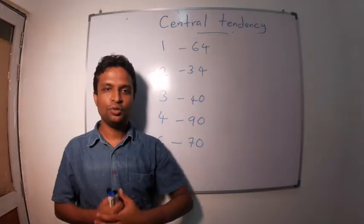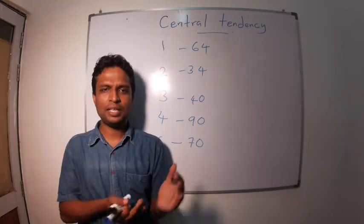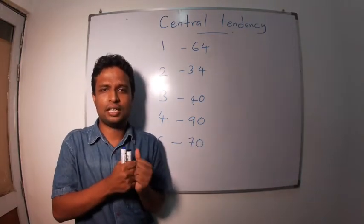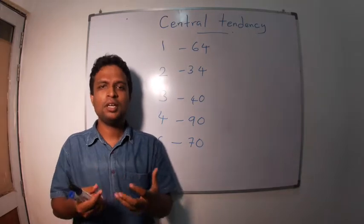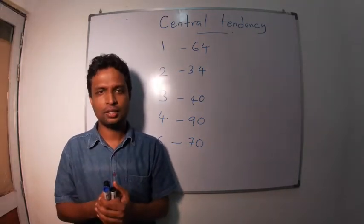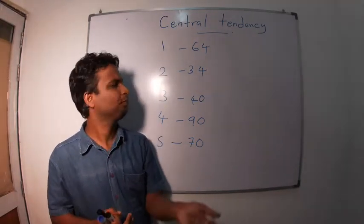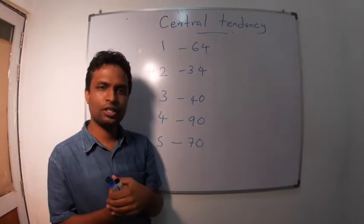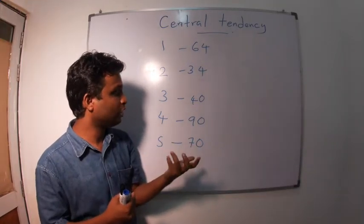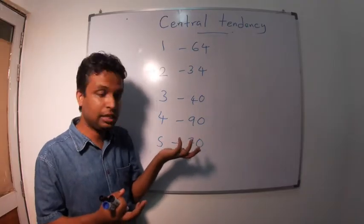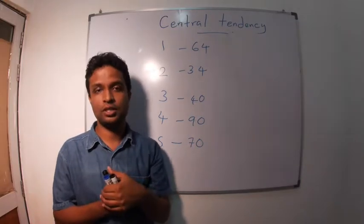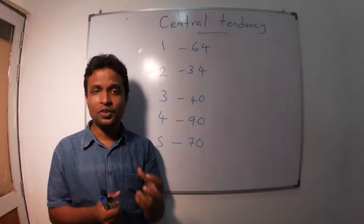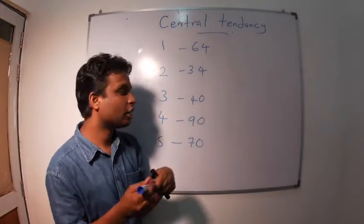Now you need to describe the marks of your class. Assume this is a small class. You can easily do that. First one has got 64, next one 34, next one 40, the best student has got 90, another student has got 70.